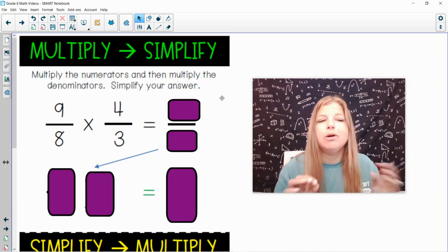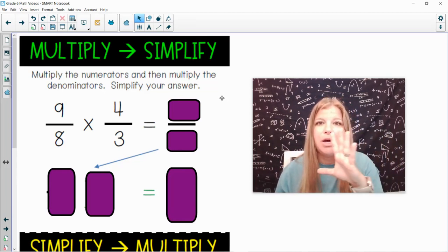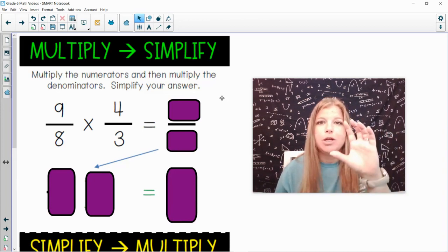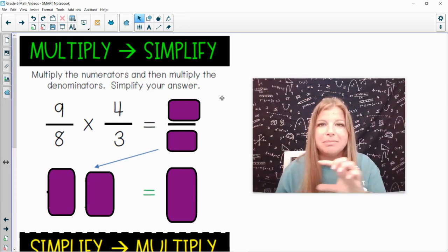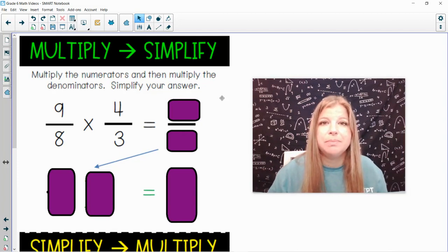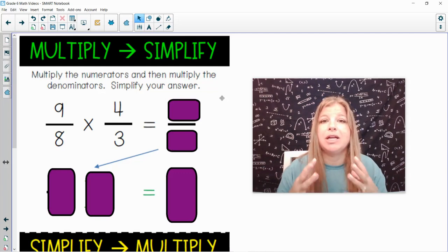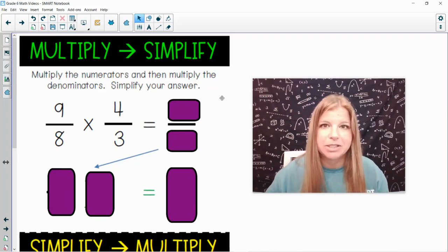So in this first strategy, it says multiply the numerators and then multiply the denominators. When we multiply fractions, we multiply straight across. Numerator to numerator, denominator to denominator. And then we just get our answer and that's our new fraction. But after we do that, we need to then simplify our answer. We need to make an equivalent fraction in its simplest form.